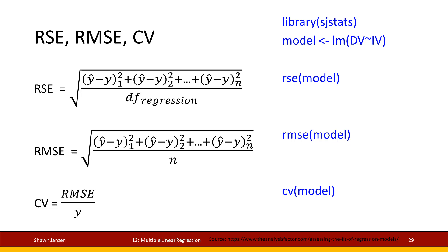And then the CV is the RMSE divided by Y-bar. So the mean of the dependent variable is divided into your root mean square error, and that gives you the coefficient of variation.